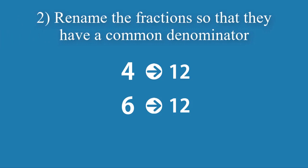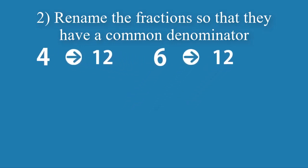Step number 2: Rename the fractions so they have a common denominator. In the previous example, we used the denominators of 4 and 6 to find the least common denominator of 12. Now we take the answer of 12 and change the original fractions.